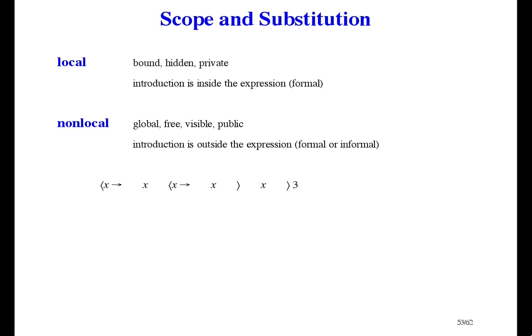Now, here's an example in which x is introduced locally twice. The outer function's x is used twice. That outer function is being applied to 3. So 3 should replace the outer function's x at both its occurrences. Like this. But it doesn't replace the inner function's x.